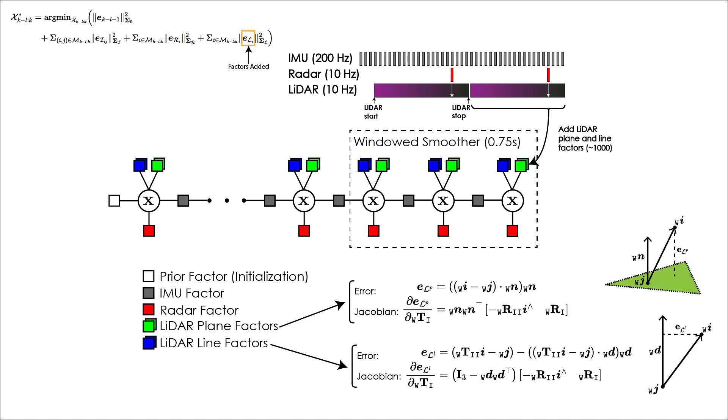On the arrival of a LiDAR measurement, the point cloud is first de-skewed using the IMU measurements to the timestamp of the radar measurement contained in its collection period. The measurement is then used to formulate line and plane factors using the globally maintained map, which are then added to the state.